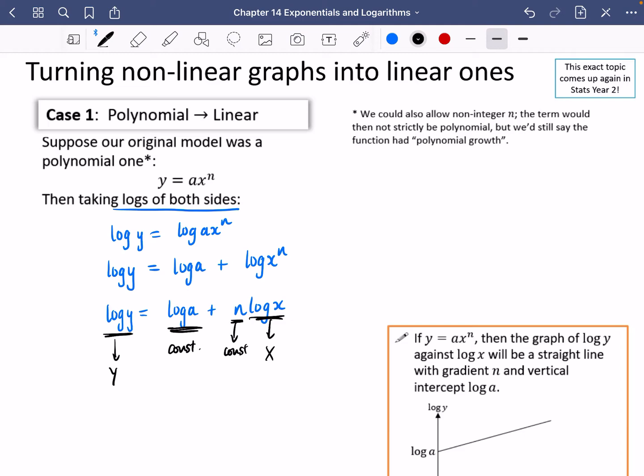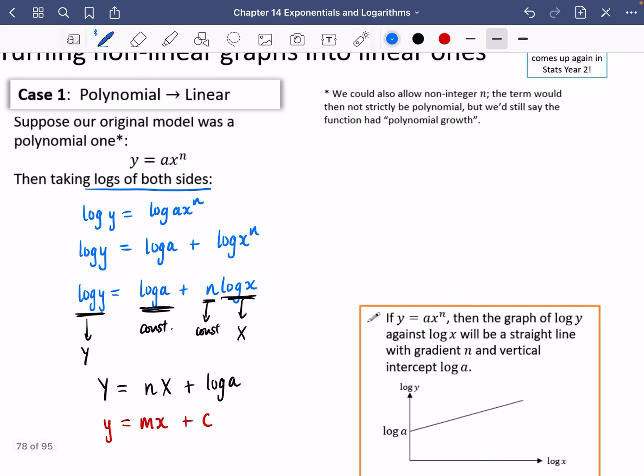So I've just used a capital letter Y and a capital letter X here. Now, if I write this down again, if I write Y is log y equals, I'm going to say nx plus log a. Doesn't this look really similar to y equals mx plus c? So this is telling me now, if I replace y with log y, and if I replace x with log x, we come up with something that is going to make a straight line.